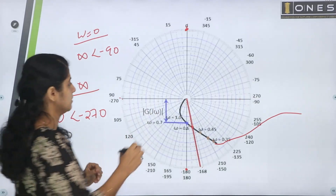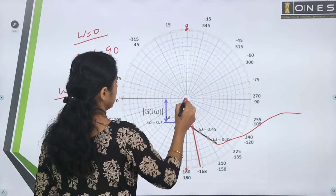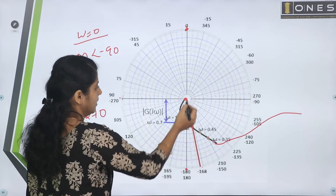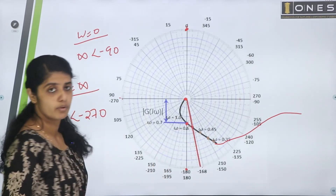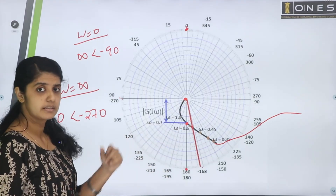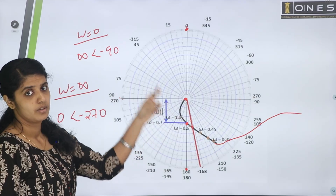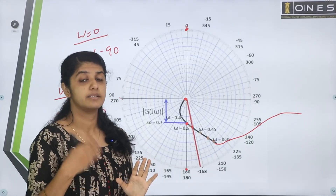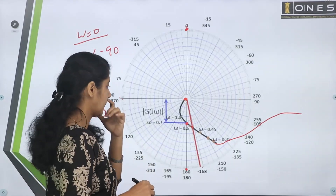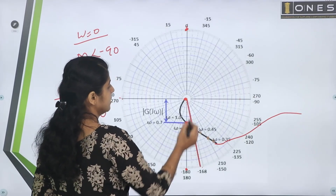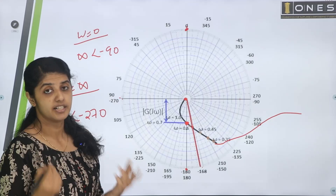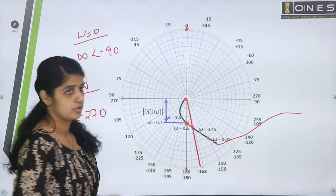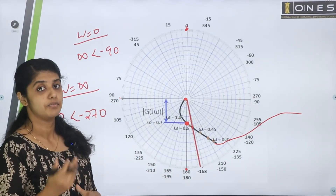Now here is the center of the graph. The polar plot crosses the real axis where the imaginary part equals zero. This crossing point is used to find the Gain Margin. Gain Margin = 1 divided by the magnitude at that gain (the point where the plot crosses the −180° axis).